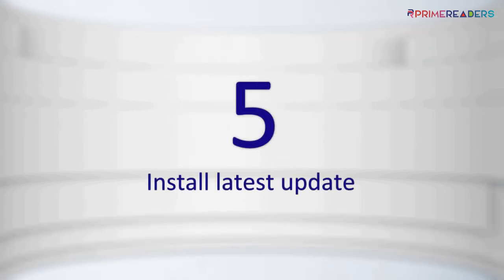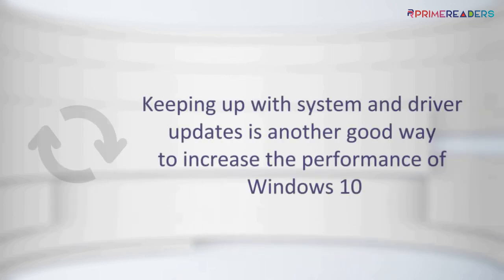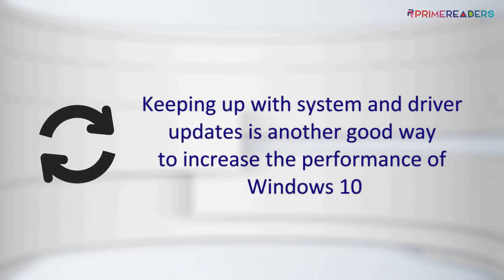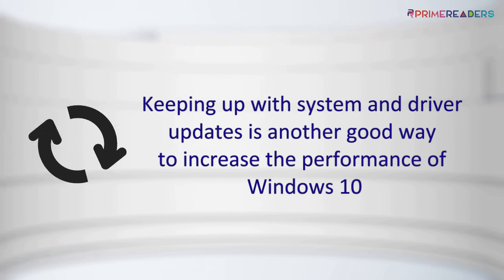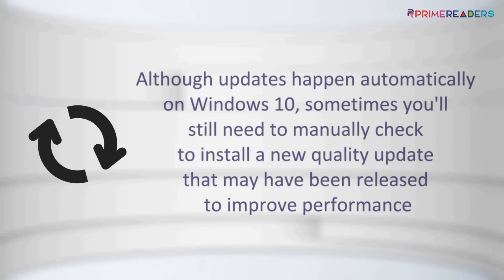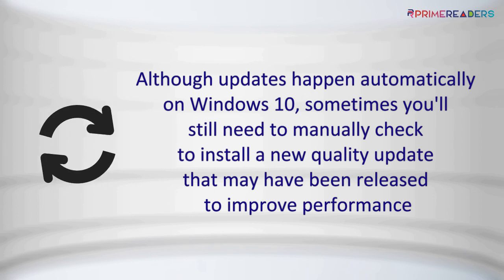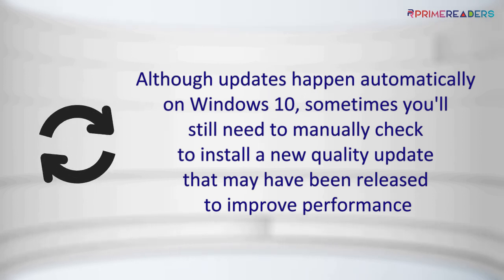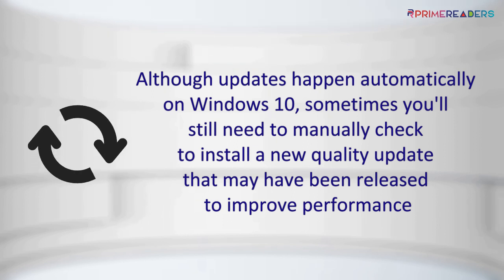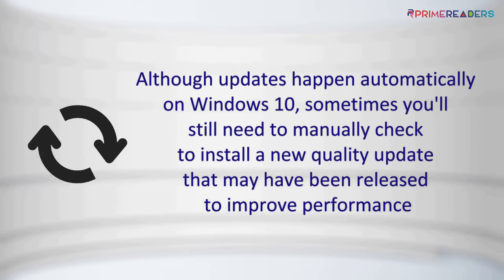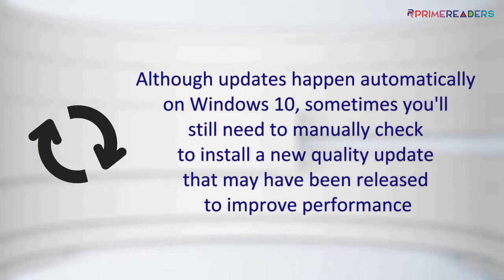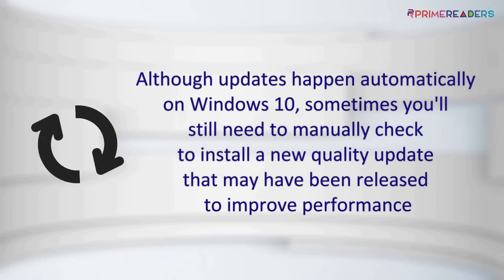Install Latest Updates. Keeping up with system and driver updates is another good way to increase the performance of Windows 10. Although updates happen automatically on Windows 10, sometimes you'll still need to manually check to install a new quality update, feature update, and device drivers that may have been released to improve performance.